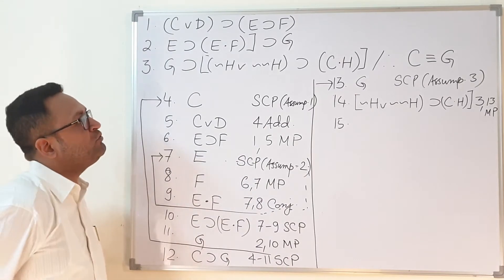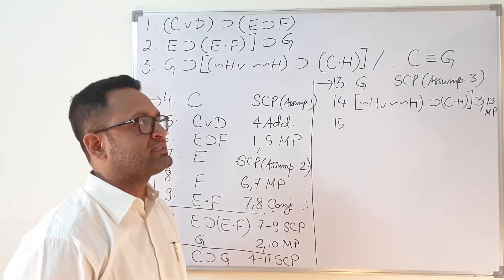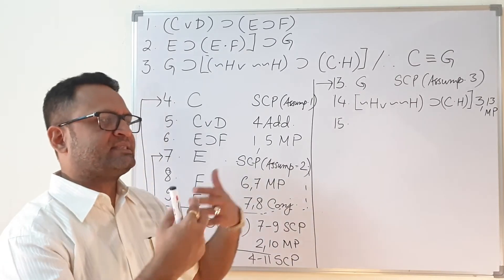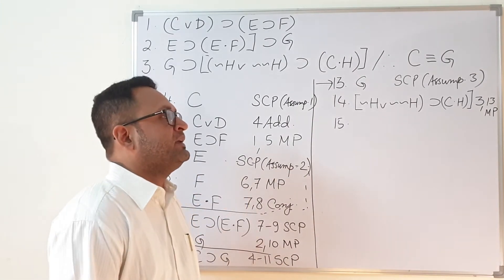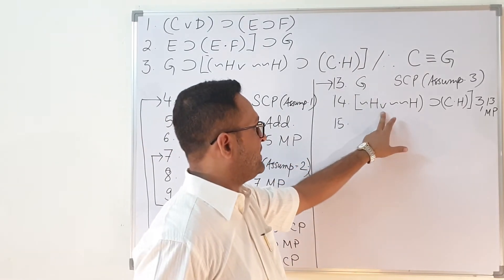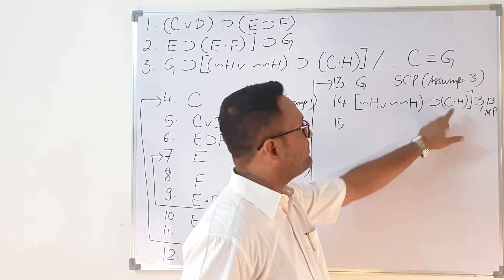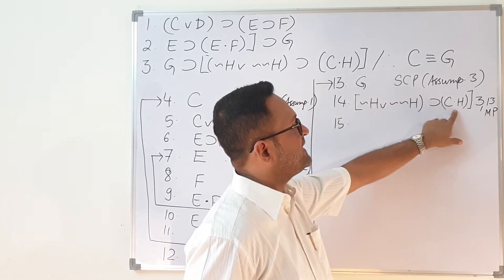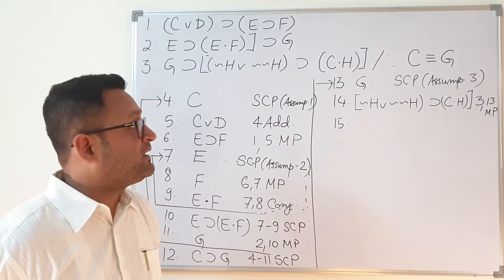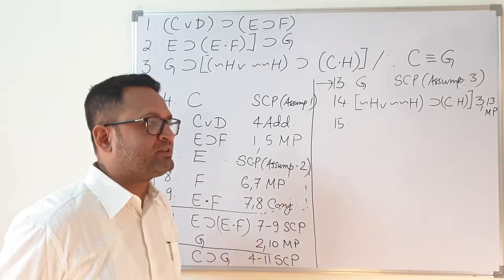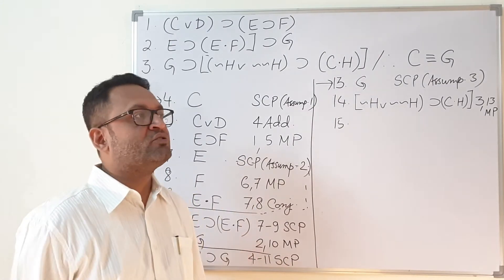Students find it difficult to understand how to create the line negation of H ∨ double negation H, because it does not seem natural. If we can create this line, then by modus ponens on line 14 we'll get C·H, and from there we can simplify to get C, so G implies C will follow. But what assumption should we take and how do we create this? That is the challenge.